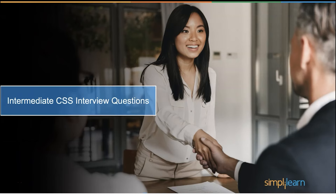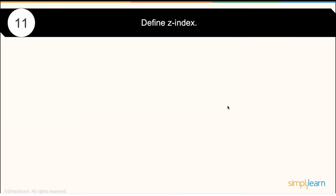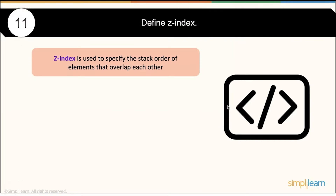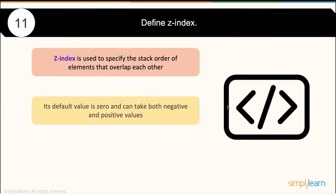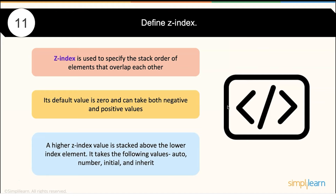Now let's talk about intermediate CSS interview questions. The first question: what is Z-index? Z-index specifies the stack order of elements that overlap each other. Its default value is 0 and it can take both negative and positive values. The higher the Z-index value, the more it is stacked above lower-index elements. It normally takes values like auto, number, initial, and inherit.